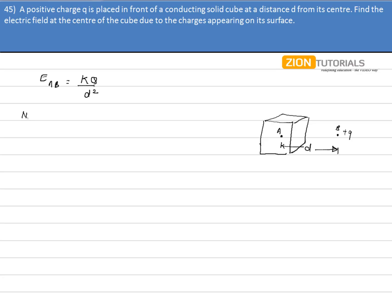Now the concern behind this question is that the solid cube is conducting, that means the net electric field inside a conductor has to be equal to zero. That is E_net inside conductor equals zero.